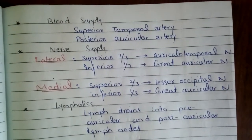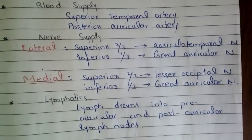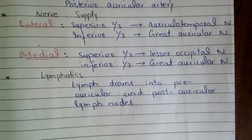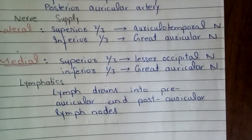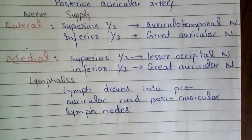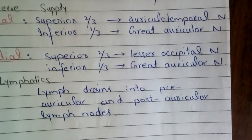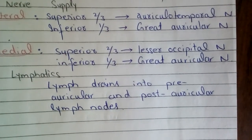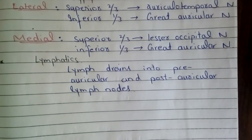Blood supply: the superior temporal artery and posterior auricular artery supply the pinna. Nerve supply: the lateral part of the ear is supplied by the superior two-thirds via the auricular temporal nerve and the inferior one-third by the great auricular nerve. Lymph drains into preauricular and postauricular lymph nodes.